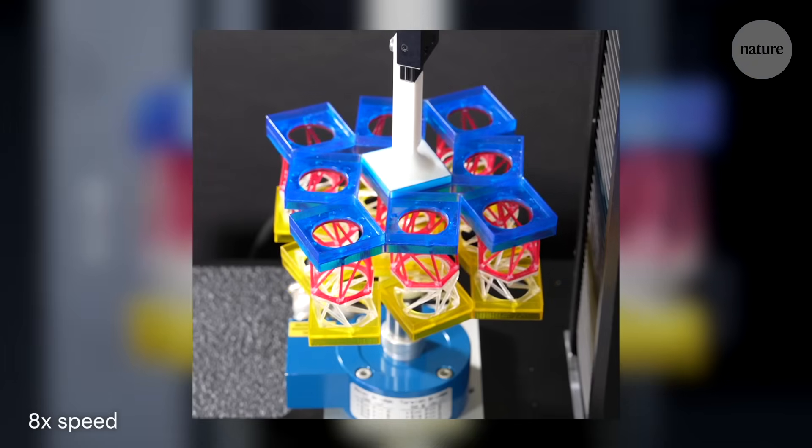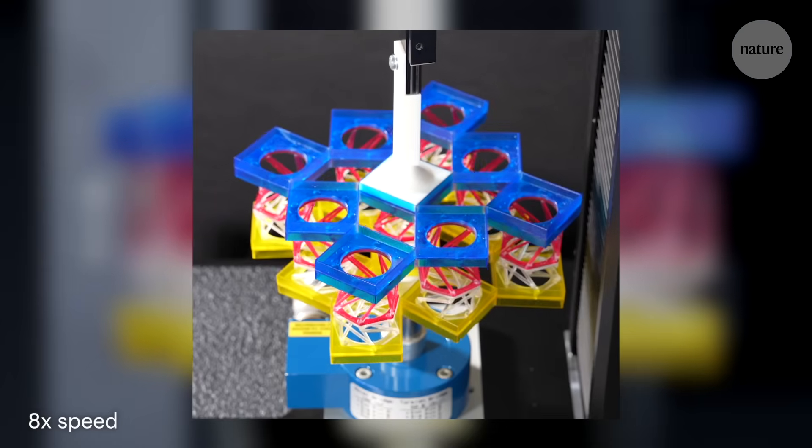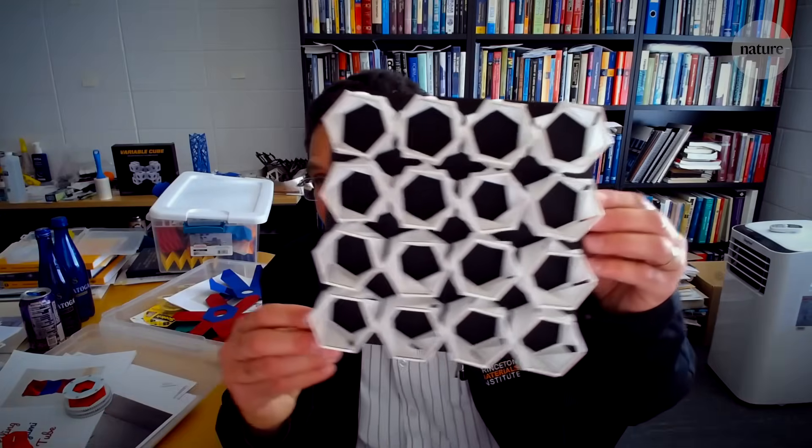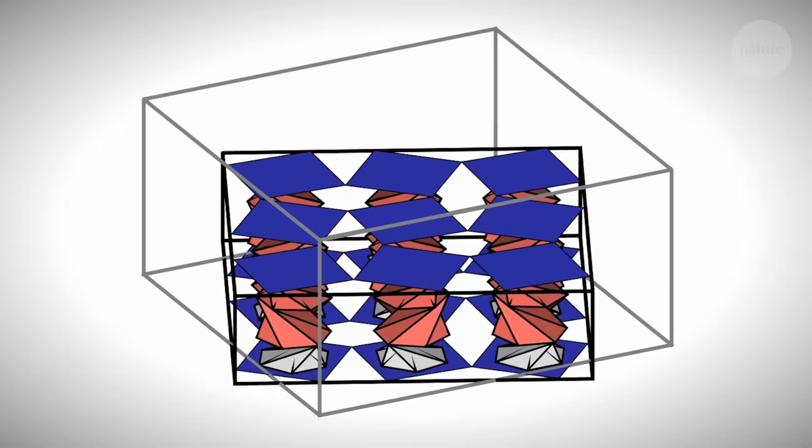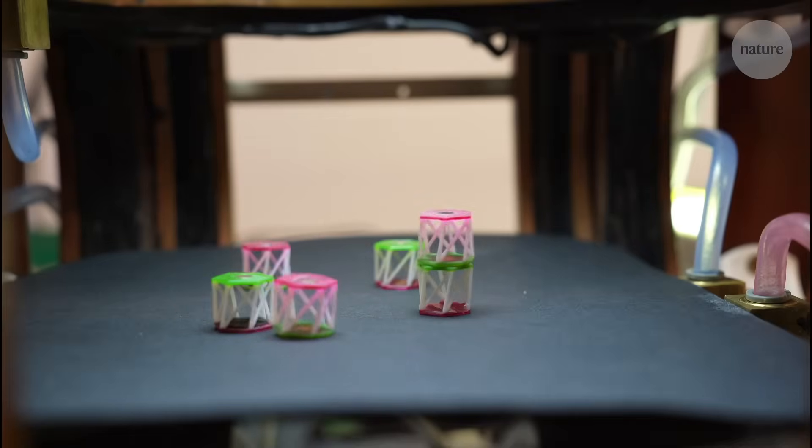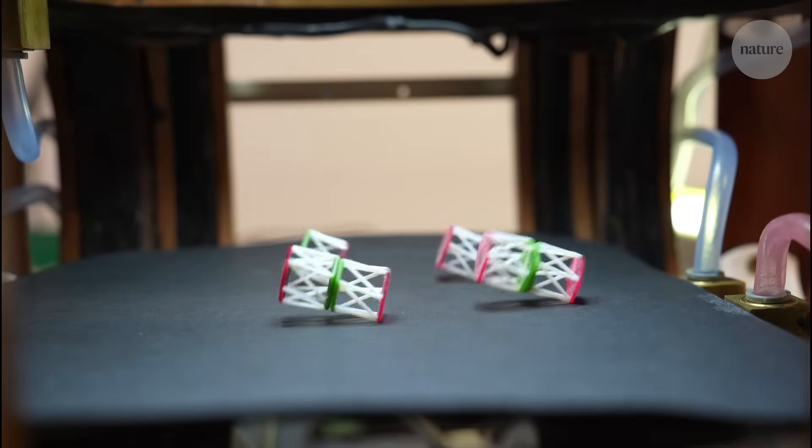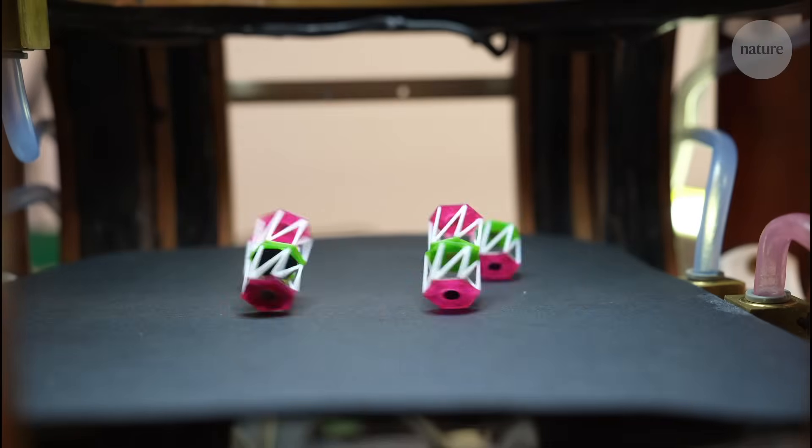This mechanical, memory-like property could have a whole host of applications. The ideas for potential uses that the team have come up with so far are just the beginning. They hope that their new metamaterial could have applications across a wide range of fields. All thanks to this fascinating combination of origami-inspired twists, bends, and folds.